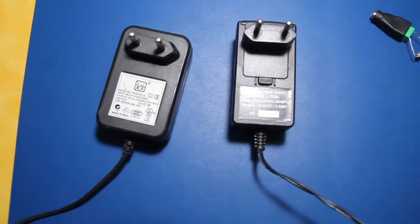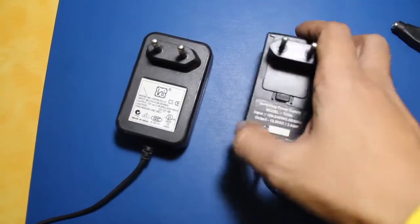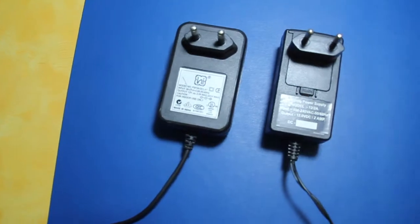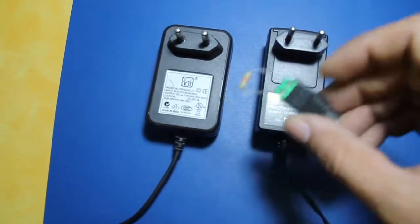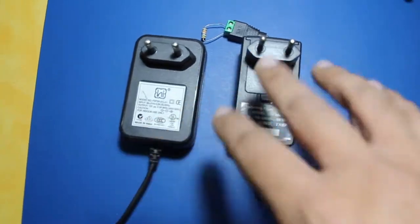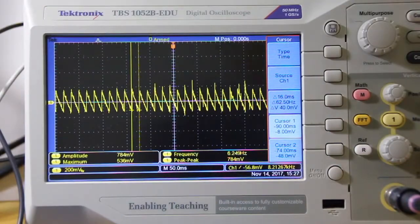For my next experiment I have these two switch mode power supplies. What I'm going to do is take both of these supplies and connect them to a small load resistor like this, and I'm going to connect a scope and we're going to do a fast Fourier transform.